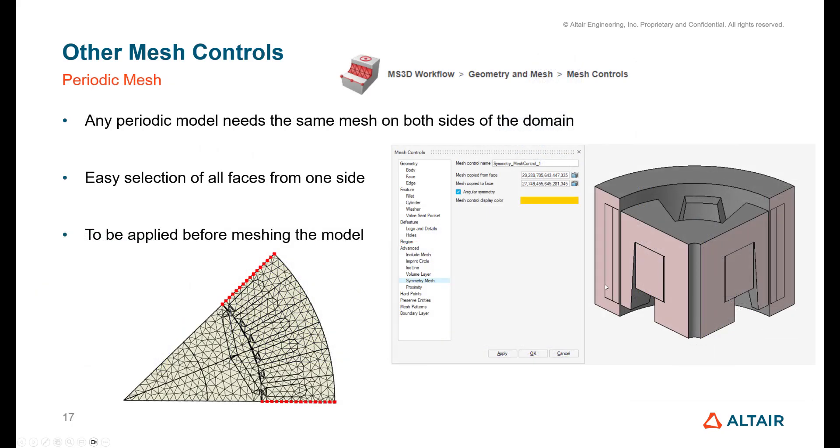We also have some periodic mesh capabilities. Whenever you do a periodic flux model like this TFM machine claw pole machine, we can basically select one face from the right, then click on this little blue cube in the place and it will select automatically all the faces from the right side. Same thing on the left, you click on one face, click on this little button, and now you have the angular symmetry which will be respected when you mesh it. You can also do this on 2D surface mesh but I think it's very powerful on the 3D parts.